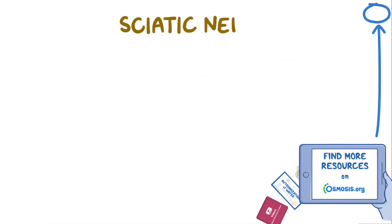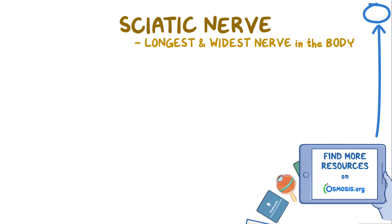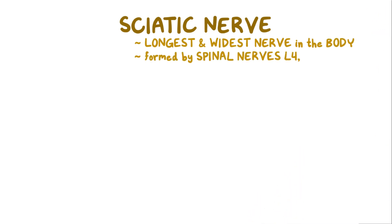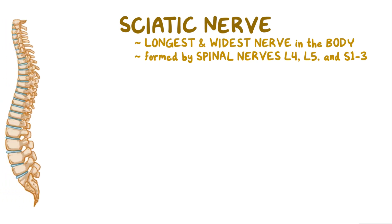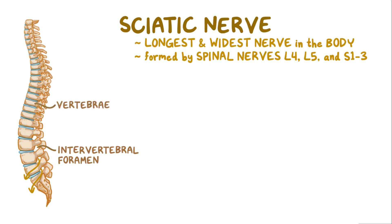The sciatic nerve is the longest and widest nerve in the body. It's formed by the spinal nerves L4, L5, and S1, S2, and S3, which leave the spinal canal through the intervertebral foramen, an opening located between the vertebrae and behind the intervertebral discs.